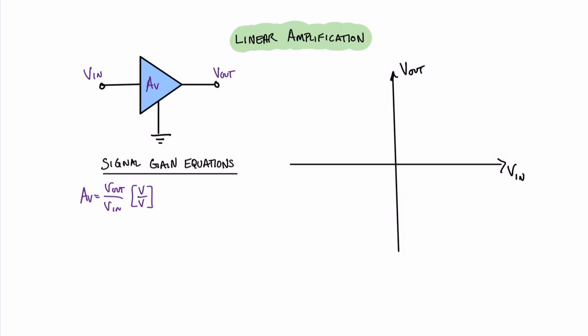The most convenient unit for gain is decibels. In the case of voltage gain we can convert volts per volt into decibels by doing 20 log of the absolute value of A sub V, in units of decibels. Note that when I write log I mean log base 10.